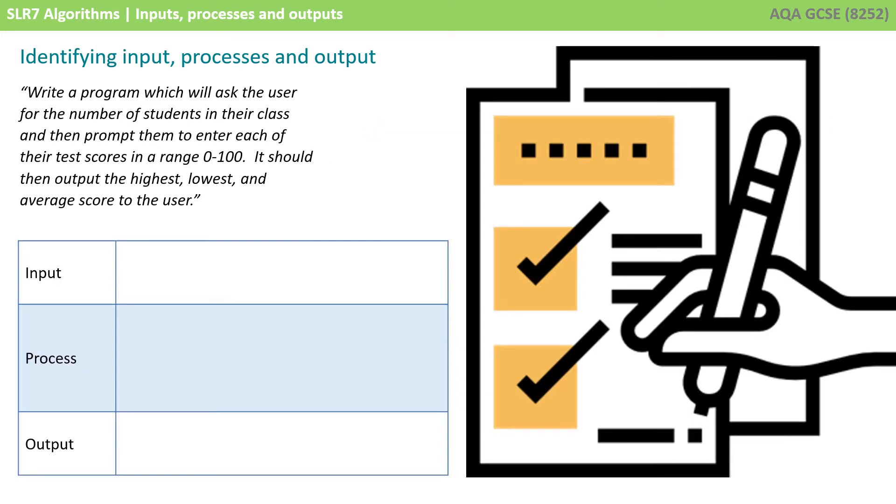Let's look at another scenario. Write a program which will ask the user for the number of students in their class, and then prompt them to enter each of their test scores in a range 0 to 100. It should then output the highest, lowest, and average score to the user.